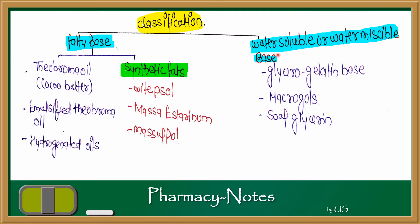Water soluble or water miscible bases include glycero-gelatin bases, macrogels, and soap glycerin. Basically, these bases are selected according to the drug and the route of administration — which cavity the suppository is to be given into determines which base is decided.